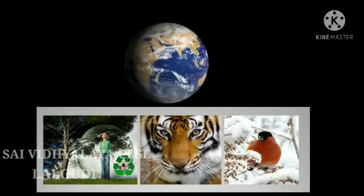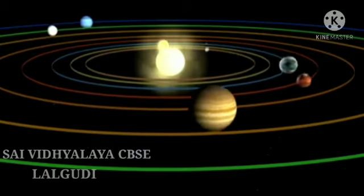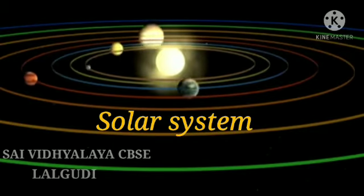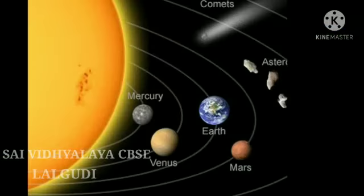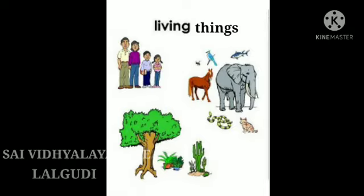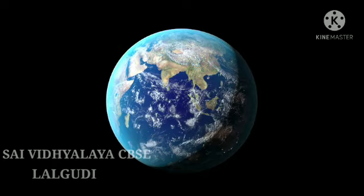Earth is round and shaped like a ball. Eight planets revolve around the Sun. The earth is one of them. The eight planets and the Sun make the solar system. The earth is the third planet in our solar system. Do you know a globe is a model of the earth? On earth we see living things such as plants and animals, as well as non-living things like cars and buildings.